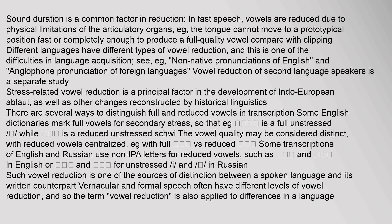Sound duration is a common factor in reduction. In fast speech, vowels are reduced due to physical limitations of the articulatory organs — e.g. the tongue cannot move to a prototypical position fast or completely enough to produce a full quality vowel. Different languages have different types of vowel reduction, and this is one of the difficulties in language acquisition, e.g. non-native pronunciations of English and anglophone pronunciation of foreign languages. Vowel reduction in second language speakers is a separate study. Stress-related vowel reduction is a principal factor in the development of Indo-European ablaut, as well as other changes reconstructed by historical linguistics. In transcription, some English dictionaries mark full vowels for secondary stress.